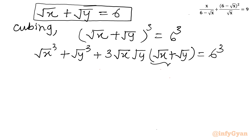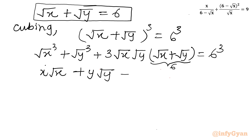So I can write x√x + y√y + 3·√(xy)·6 = 216, which gives x√x + y√y + 18√(xy) = 216.